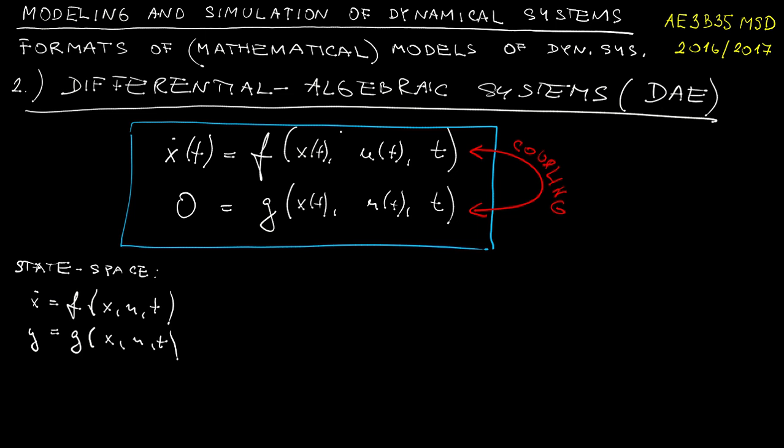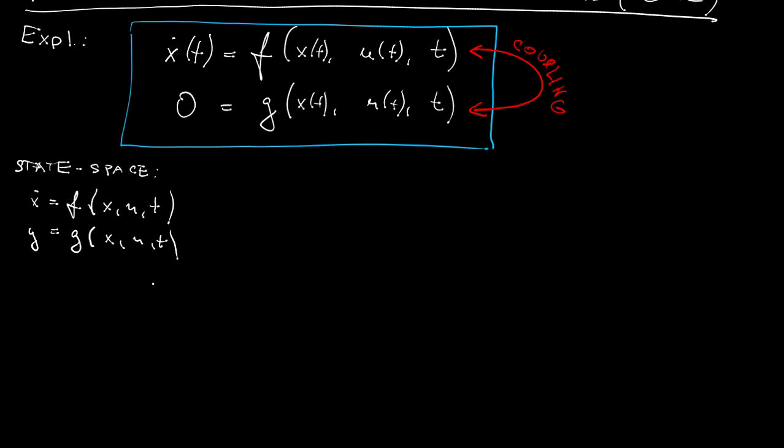In fact, what I have introduced here is called an explicit DAE model. Explicit because the derivative is explicitly expressed on the left-hand side, whereas we can also have an implicit DAE model, which looks like this. 0 is equal to a function of the derivative of x, x itself, u, and t. And on top of that, we can add the algebraic equation as before.